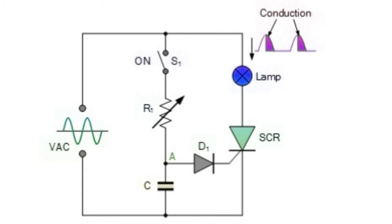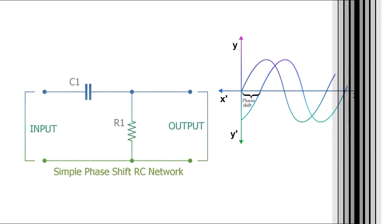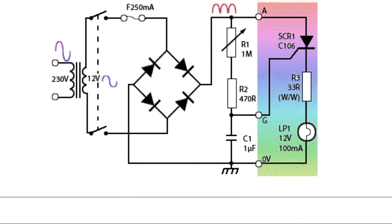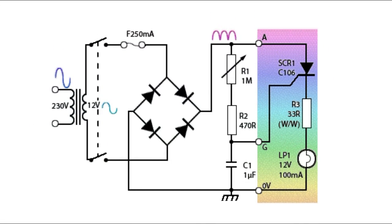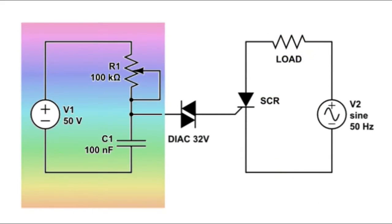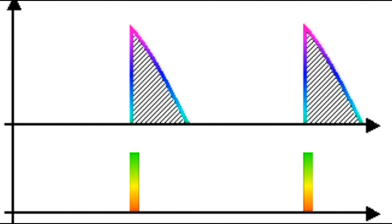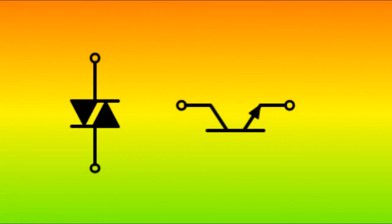Two things are required for phase control: first, a variable phase shift circuit — usually a passive RC circuit — and second, a circuit or component that can generate the necessary gate pulse when the delay waveform reaches a certain level. One of the semiconductor components designed to produce these gate pulses is the DIAC. The DIAC structure is like a transistor, with the difference that it does not have a base current and can therefore be connected to the circuit with any polarity.